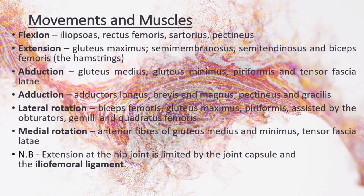Movements and muscles. Flexion is produced by iliopsoas, rectus femoris, sartorius, and pectineus. Extension by gluteus maximus, semimembranosus, semitendinosus and biceps femoris (the hamstrings). Abduction by gluteus medius, gluteus minimus, piriformis and tensor fascia latae. Adduction by adductors longus, brevis and magnus, pectineus and gracilis. Lateral rotation by biceps femoris, gluteus maximus, piriformis, assisted by the obturators, gemelli and quadratus femoris. Medial rotation by anterior fibers of gluteus medius and minimus, and tensor fascia latae. Extension is limited by the joint capsule and the iliofemoral ligament, which become taut during extension to limit further movement.